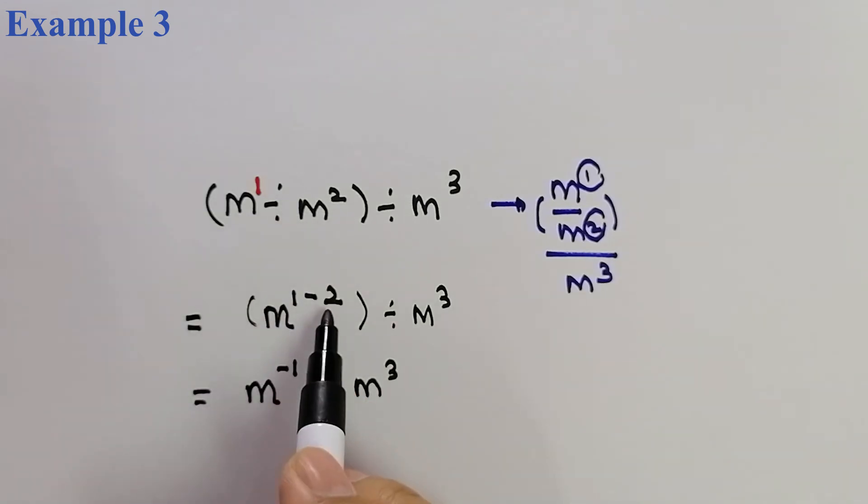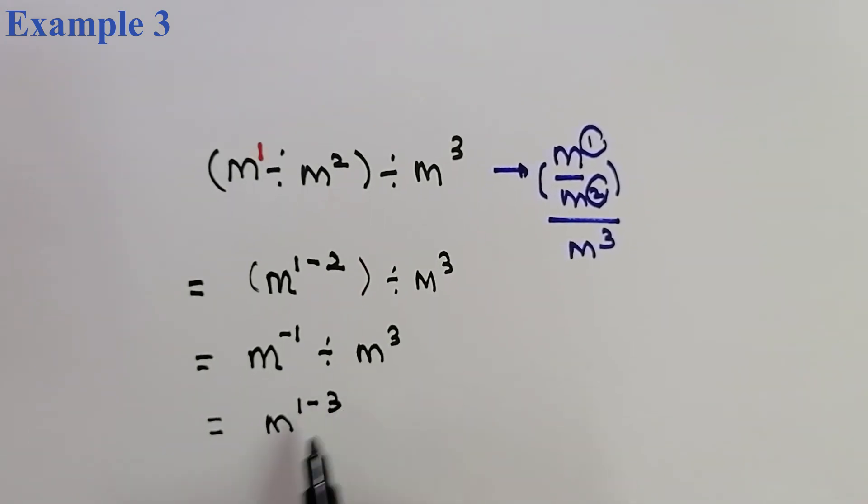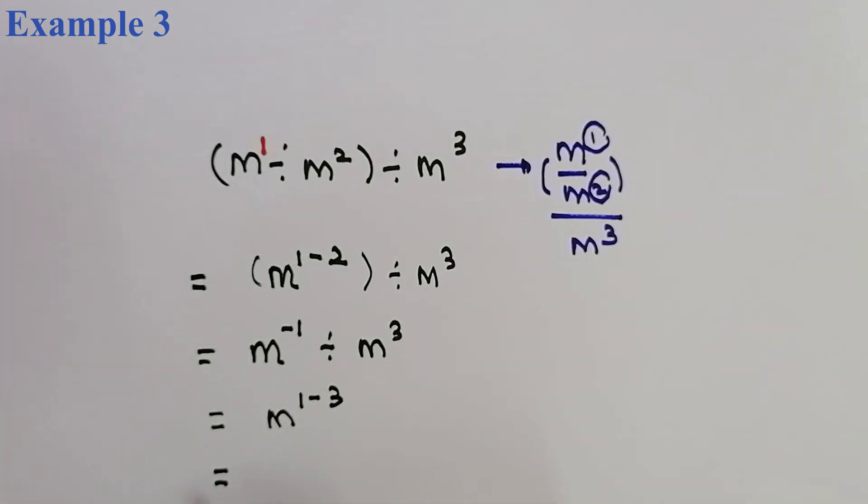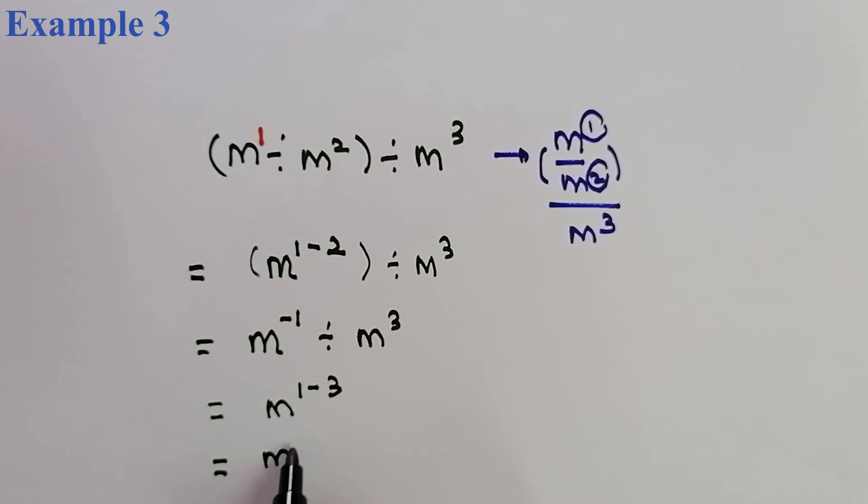So, yang ini akan jadi M power of negative 1 divided by M power of 3. Division juga kita akan lakukan. Substraction power of power. M power of 1 tolakkan dengan M power of 3. So, apa yang akan kita dapat adalah M power of negative. Ini adalah jawapan.